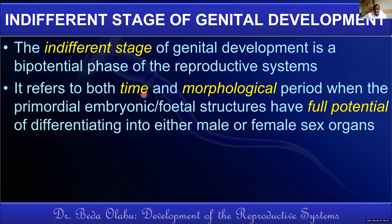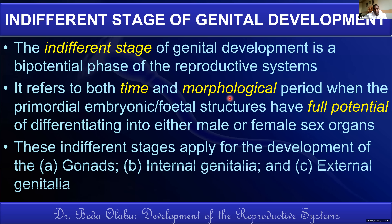There is also a morphological period — when you look at the structure of that embryonic structure, you cannot really tell whether it will be male or female because of the uniform anatomical structure. The concept of the indifferent stage applies to three things: it applies to the development of the gonads, it applies to the development of the internal genitalia, and it applies to the development of the external genitalia.